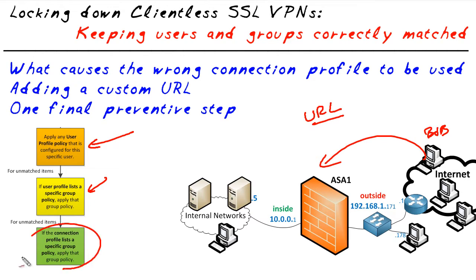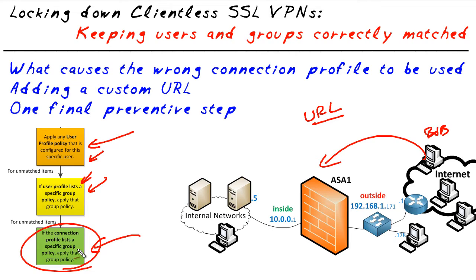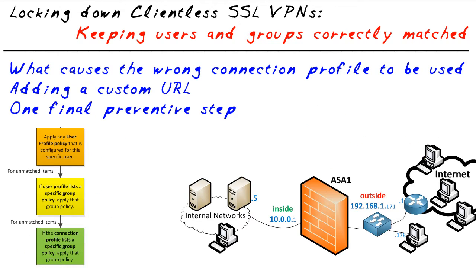But this is a problem, because if the user came in on, for example, the sales connection profile, then whatever didn't get inherited or taken from those two policies, he's going to get from the wrong group. You're having a user authenticate successfully, but still getting incorrect policies because of the wrong connection profile he came in on. Let's set the stage.